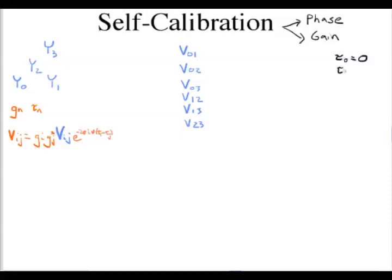That means the remaining degrees of freedom — tau_1, tau_2, and tau_3 — are the true unknowns in phase calibration. For four antennas we only have three independent parameters to solve for. In general, with N antennas you have N minus one degrees of freedom, meaning the minimum number of antennas needed to self-calibrate phase is three. Any triangle of antennas can produce a phase calibration.